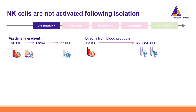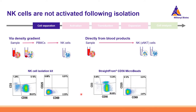Looking in more detail, when using the untouched NK Cell Isolation Kit versus the straight-from CD56 microbeads, you can see that because the positive approach isolates all CD56-expressing cells, it also enriches for NKT cells. However, what I want to emphasize is that independent of which separation strategy you choose — whether labeling non-target cells or labeling the NK cells — there is no activation of the NK cells, no increased expression of CD69 or CD25, and no difference between the untouched and positive isolation.